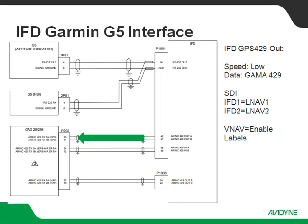Next, the IFD GPS ARINC 429 out — this is out of the 1001 connector, so it's our main ARINC 429 config page. We're going to set that up for low speed and Gamma 429 as the data format. Also on our main ARINC 429 config page, we'll set up our SDI to designate this as IFD number one or two by selecting LNAV1 or LNAV2. We're going to set our VNAV setting to enable labels, which allows the IFD to output the ARINC 429 labels associated with vertical guidance on a GPS approach.